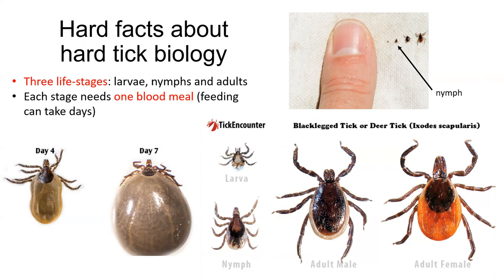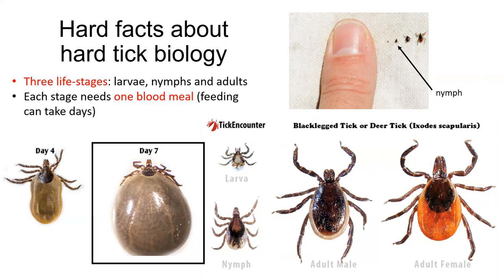Each stage needs one blood meal to molt into the next stage. Blood feeding can take days, unlike mosquitoes. On the bottom left, there is a picture of a female tick that has changed sizes after engorging on blood for seven days. As you can see, there's a dramatic change in the appearance of the tick from day four to day seven. It's important to know that the longer ticks remain attached and feeding, the greater the risk of disease transmission to the animal or person.